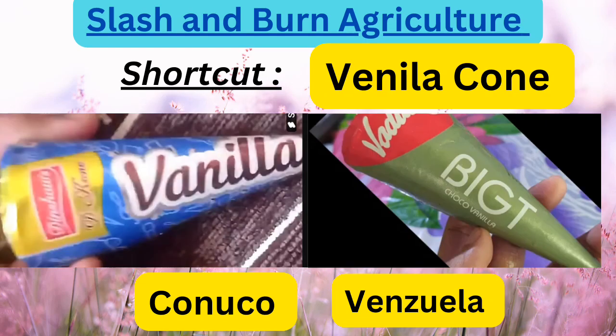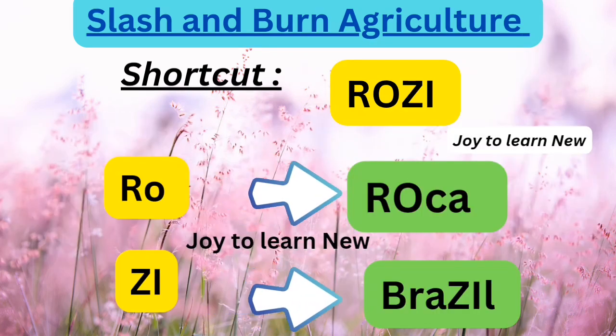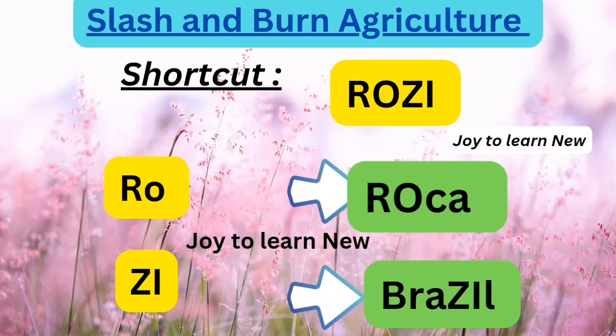The next shortcut is 'vanilla corn ice cream.' Vanilla refers to Venezuela, corn implies C-O-N, referring to Conaco. So slash and burn agriculture is called Conaco in Venezuela.